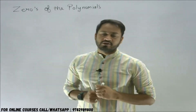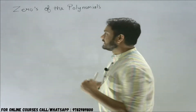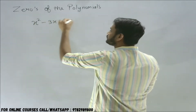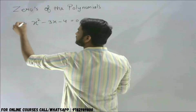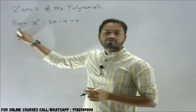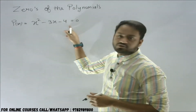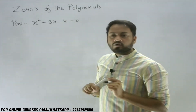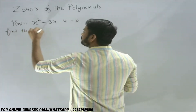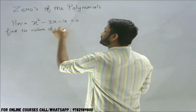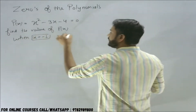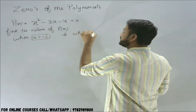What are the zeros of the polynomial? To find the zeros of the polynomial, let's take an example: x squared minus 3x minus 4 equal to 0. We can consider it as p(x), which means a polynomial in terms of x. Now we need to find the value of p(x) when x equals minus 1 and when x equals 4.